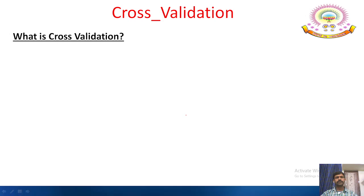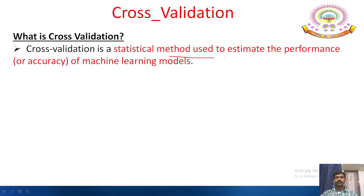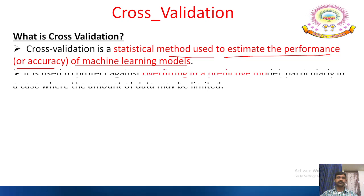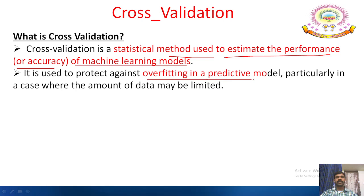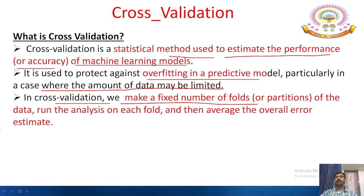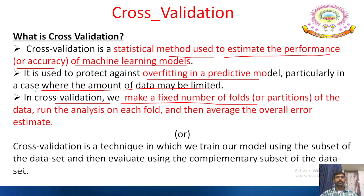Cross validation is a statistical method used to estimate the performance or accuracy of machine learning models. It is used to protect against overfitting in a predictive model, particularly when the amount of data may be limited. In cross validation, we make a fixed number of folds or partitions of the data, run the analysis on each fold, and then average the overall error estimate. Alternatively, we train our model on a subset of the dataset and evaluate using the complementary subset.